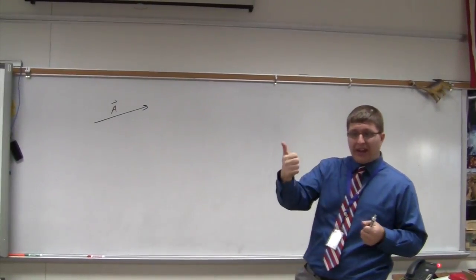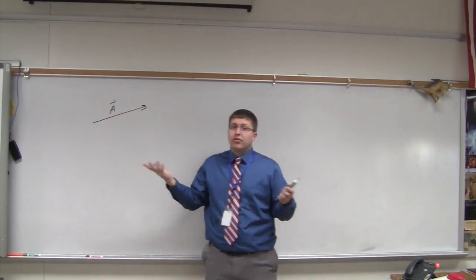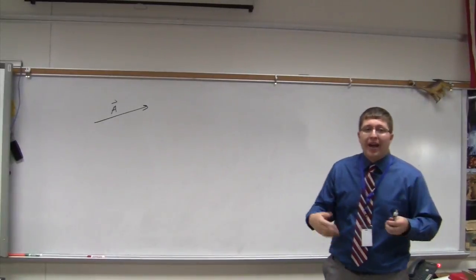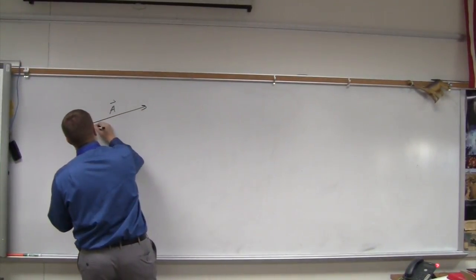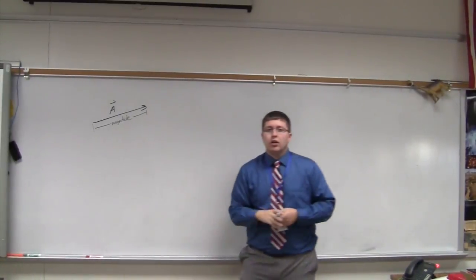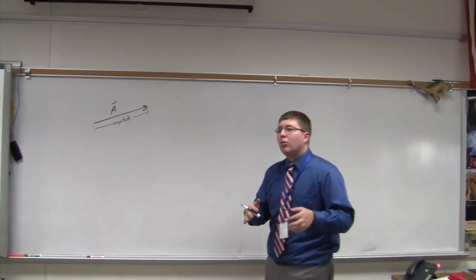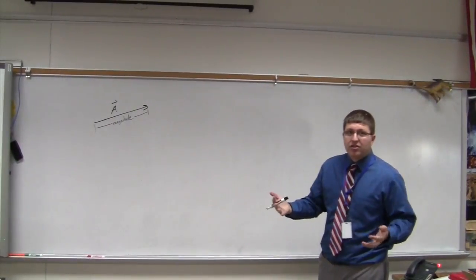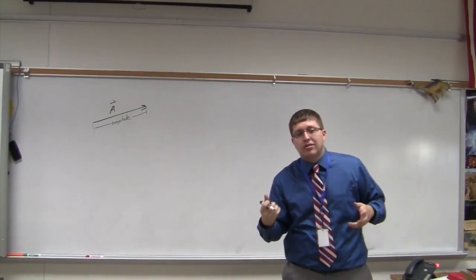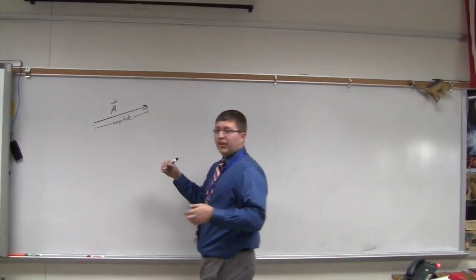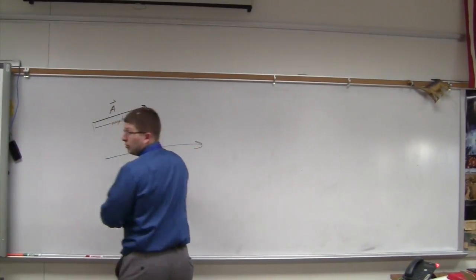So very simply here on the board, I drew vector A. The nice thing about using an arrow is it gives us everything we need in a vector. Don't forget, a vector has two things, magnitude and direction. The direction is pretty straightforward. The arrow points in whatever direction the vector is going. The magnitude is represented by the length of the vector.